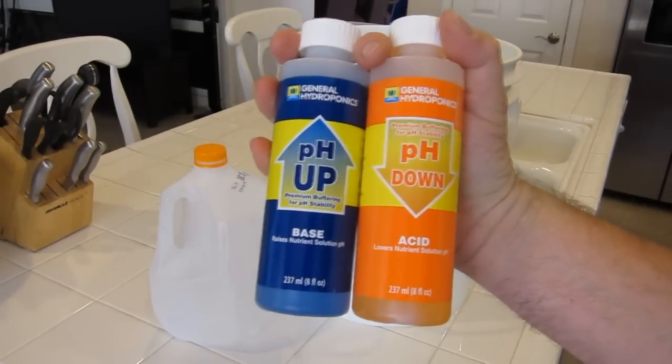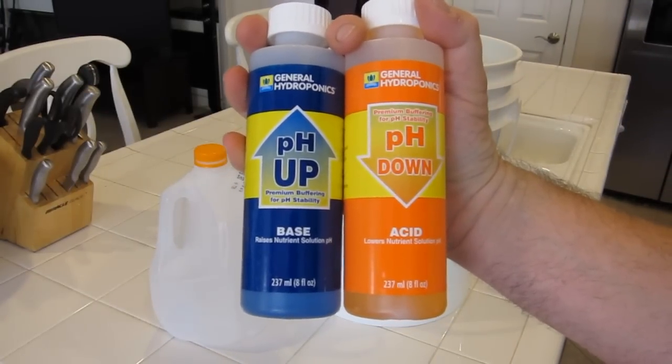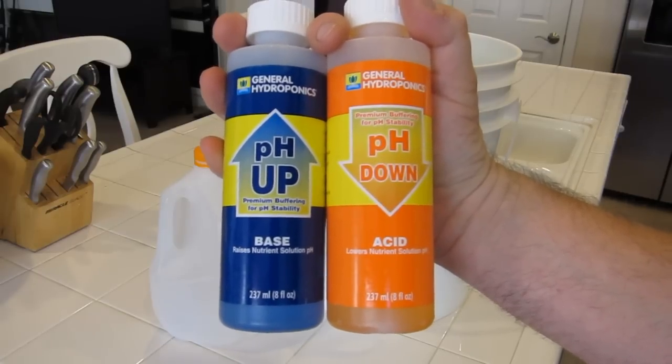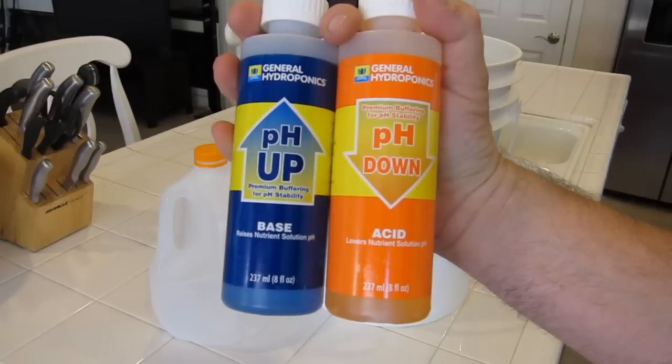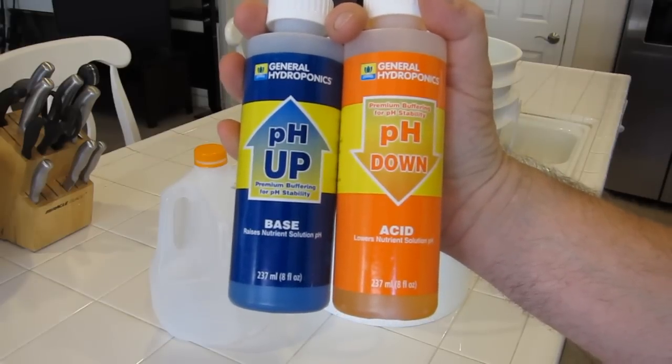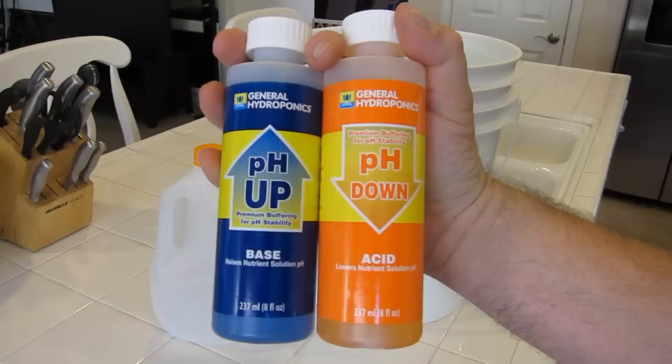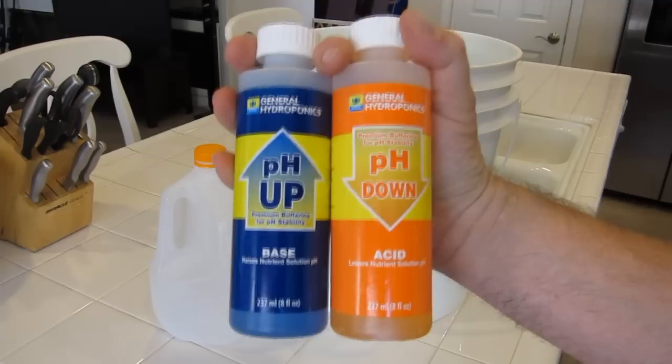General Hydroponics offers these products called pH Up and pH Down. Basically, it does what it says—pH Down makes the water a little more acidic, and pH Up adds more base, which is more alkaline. You can purchase these through General Hydroponics, but there is a cheaper solution and I found an easier way of doing it.